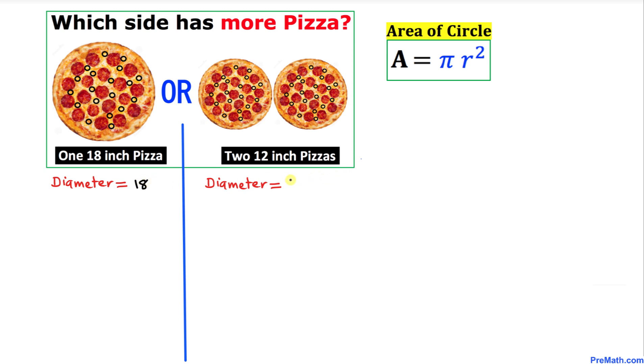On this side, I'm going to write: diameter is 12 inches. We know that the radius is half of the diameter, so the radius is going to be 9 inches for the 18-inch pizza, and 6 inches for the 12-inch pizza.